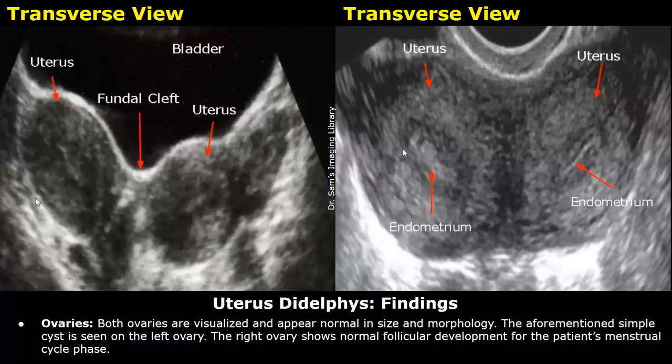Ovaries: both ovaries are visualized and appear normal in size and morphology. The aforementioned simple cyst is seen on the left ovary. The right ovary shows normal follicular development for the patient's menstrual cycle phase.